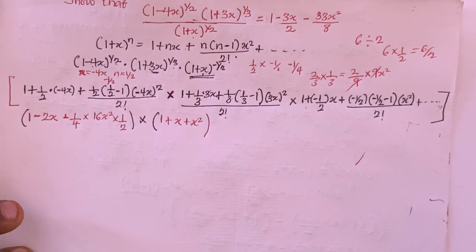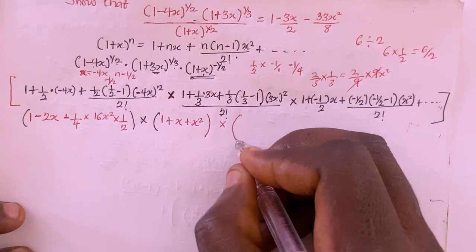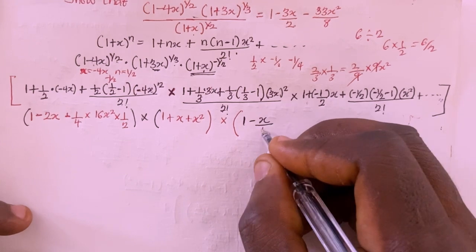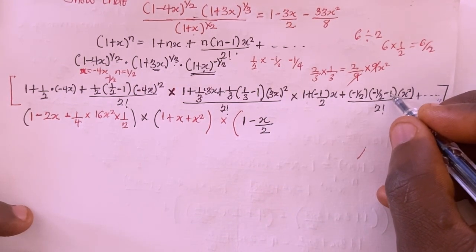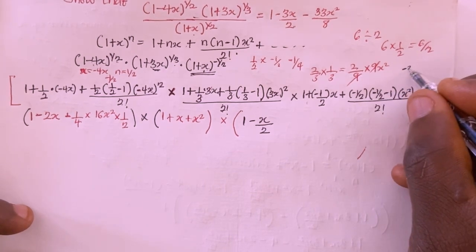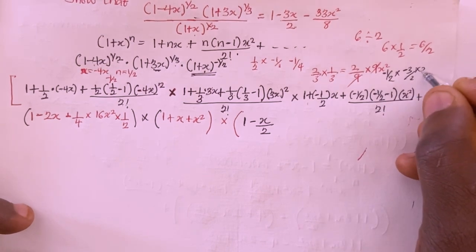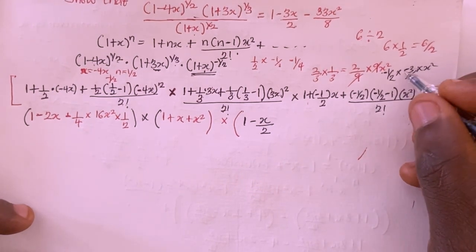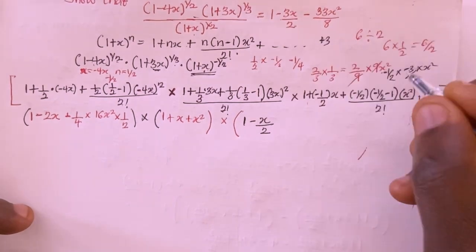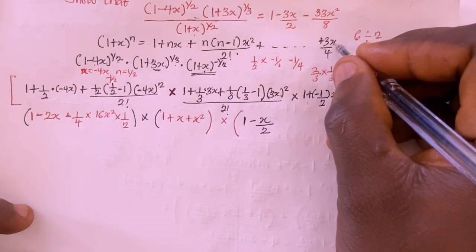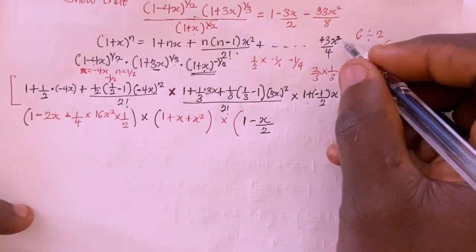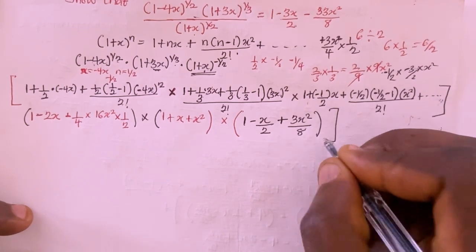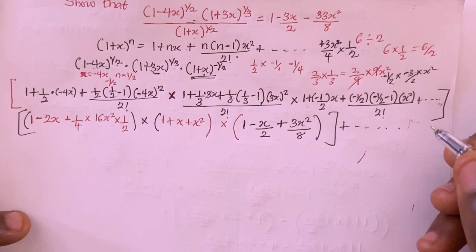For the third expansion: 1 + (-1/2)(x) = 1 - x/2. Then (-1/2 - 1) = -3/2, and (-1/2)(-3/2) = 3/4. So the x² term is (3/4)(x²) divided by 2 factorial, which multiplied by 1/2 gives 3x²/8. The third expansion simplifies to 1 - x/2 + 3x²/8.